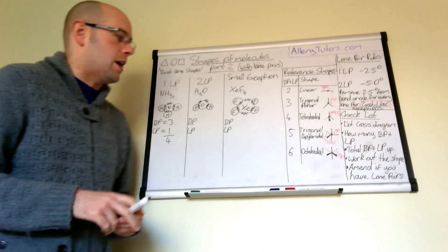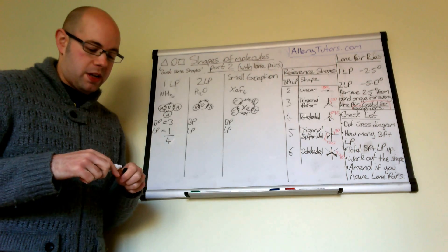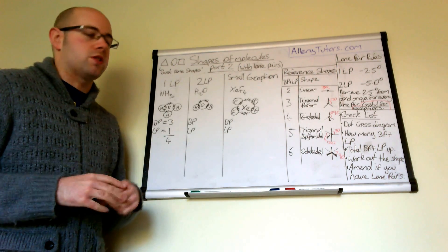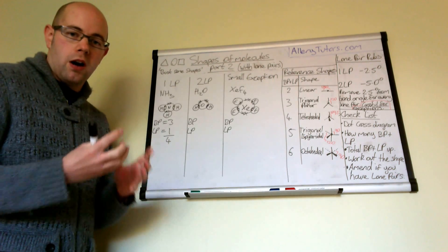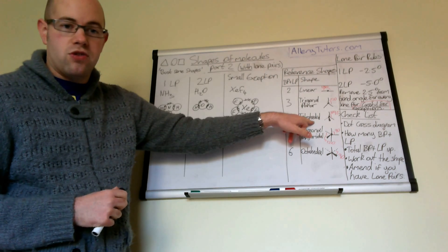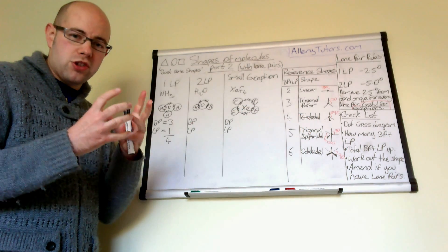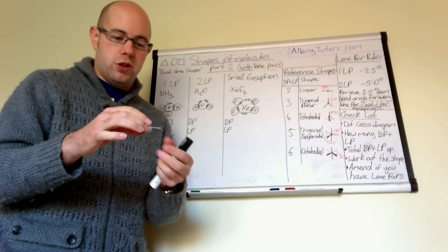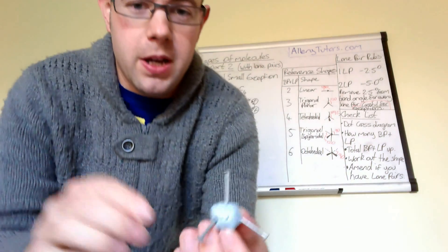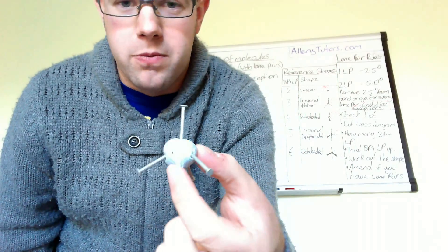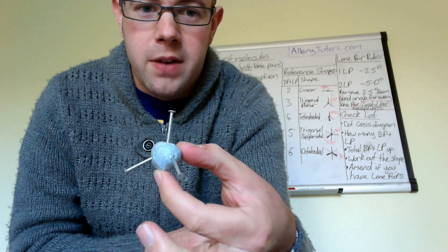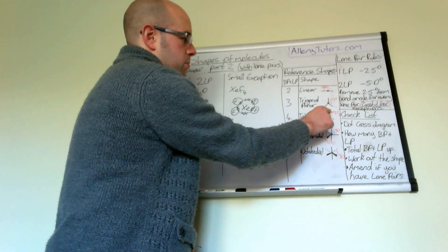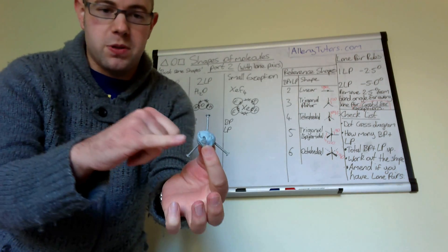Once we've done that, we need to work out the reference shape — the shape we can start with — and then alter it according to how many lone pairs we have. Our total is four, so this means that our molecule is actually based on a tetrahedral shape. If you imagine the shape of your molecule, it would have four different bonds coming from the centre — that's the tetrahedral shape. Each bond angle is 109.5 degrees between each of these bonds.